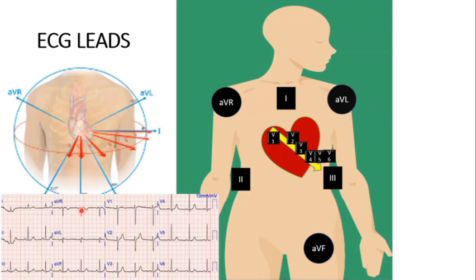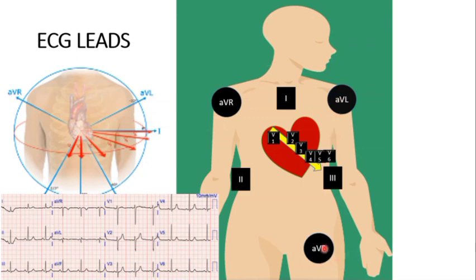A few waves are pointed downward — this is because each lead looks at the heart from a different direction. For example, the current passes downwards, but AVR is on the opposite side, so those waves appear inverted — pointing downwards. So in AVR, if waves are pointing downwards with normal rhythm, that is normal. Leads like AVF and Lead 3 are in the direction of current flow, so their waves point upwards. Some leads show downward deflections simply because they are placed opposite to the direction of current passage.